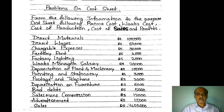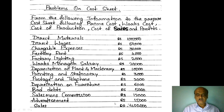Problem: From the following information, prepare a cost sheet showing prime cost, works cost, cost of production, cost of sales, and profit. Direct materials: rupees 1 lakh. Direct wages: 50,000. Chargeable expenses: 30,000. Factory rent: 4,000. Factory lighting: 2,000. Works manager salary: 20,000. Depreciation on plant and machinery: 10,000. Printing and stationery: 3,000. Telephone and postage: 2,000. Depreciation on furniture: 2,000. Bad debts: 5,000. Salesman's commission: 12,000.